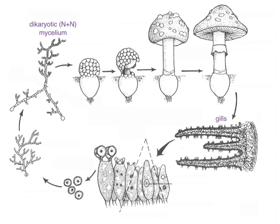Here they are. When they're young, those cells will be N plus N, and then those two nuclei will fuse together and make a zygote, very briefly. That zygote will then undergo meiosis and make four nuclei inside of the basidium. Each of those nuclei then migrates to the tip of one of the parts of the basidium and makes a basidiospore. So each mature basidium has four haploid spores that it has made.